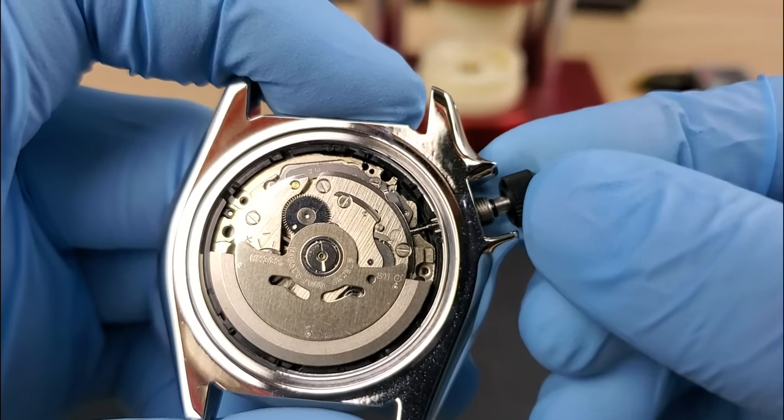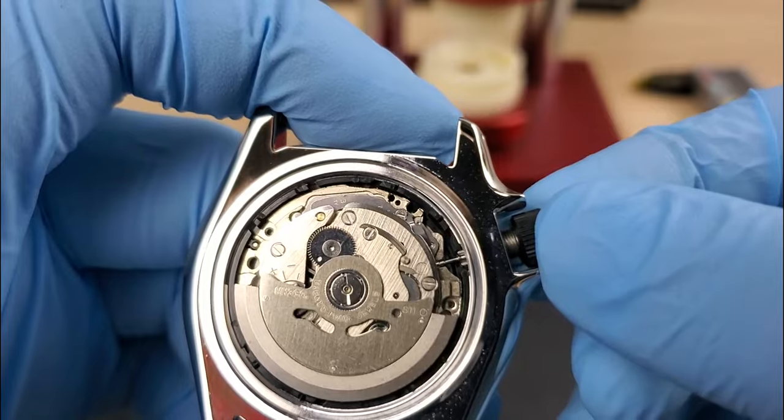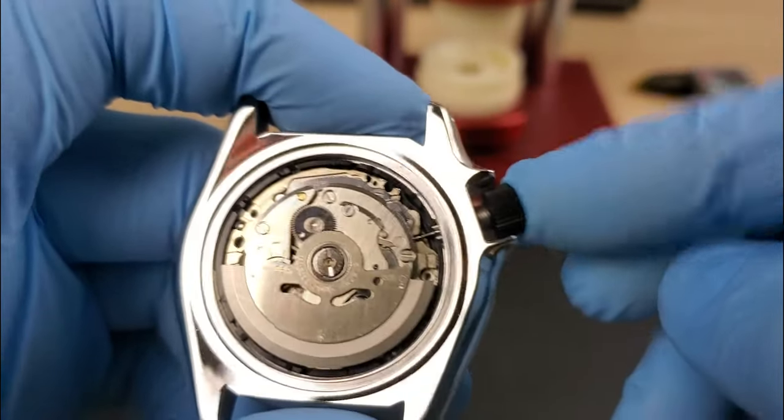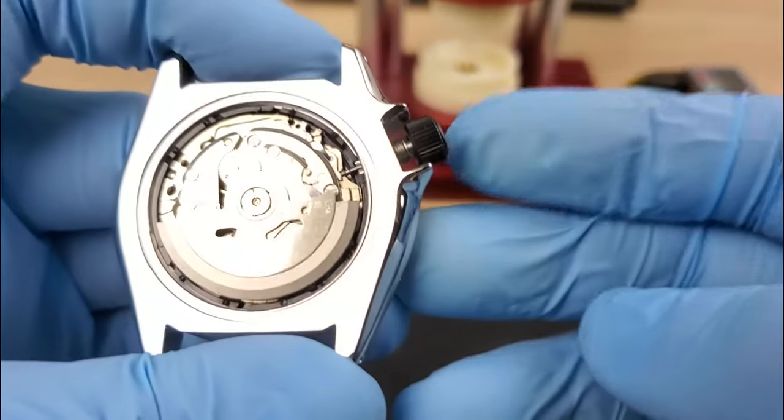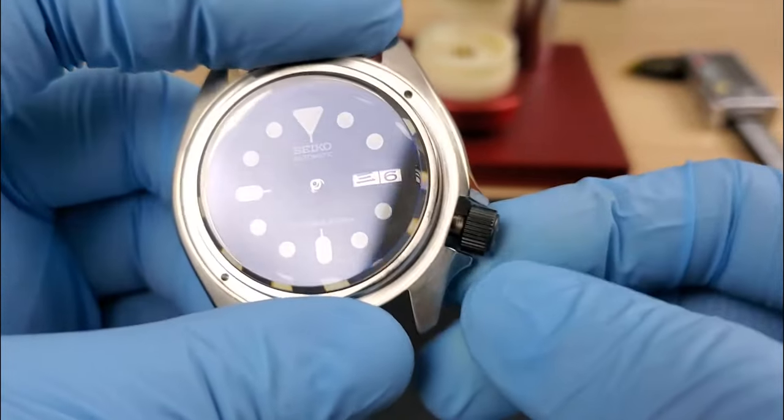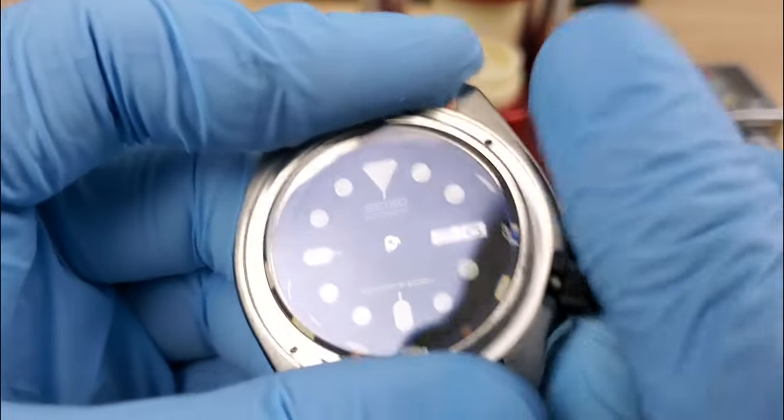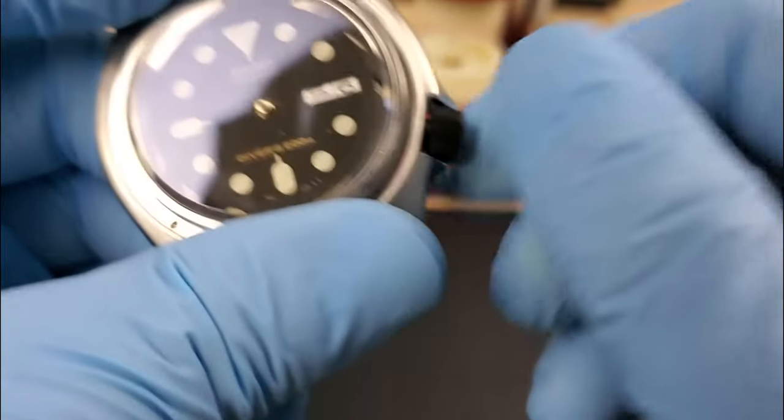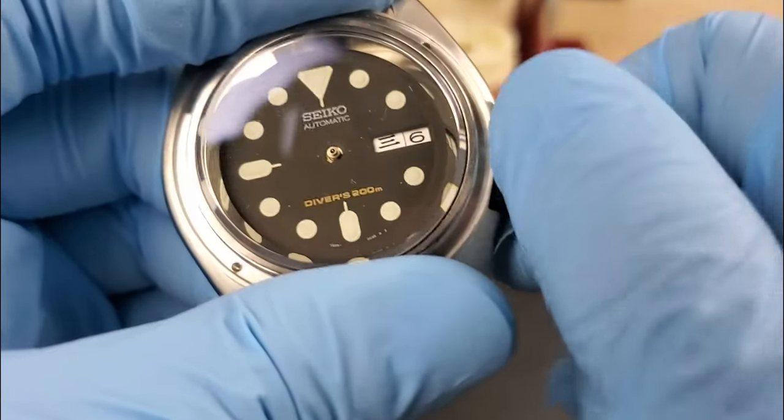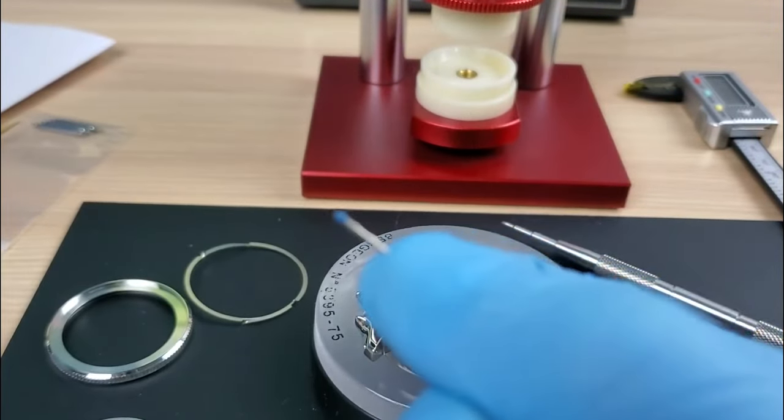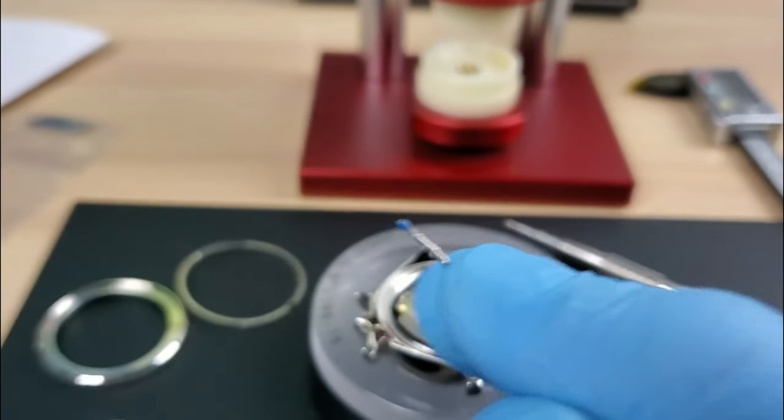Once we're done, we're gonna do a test fit and check if it fits in the movement. Make sure when you're winding it, it's locked, it works. Now when we wind it, if it starts to screw down, then you cut too much and you need a new stem. So it's better to cut too little and then sand it slowly and keep trying.